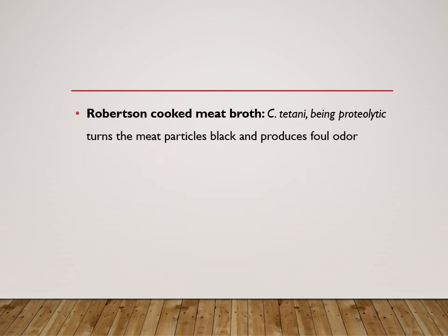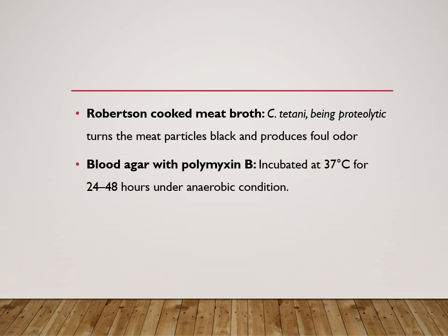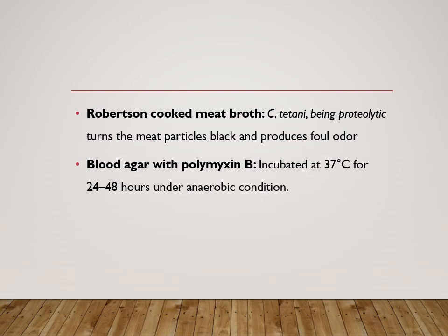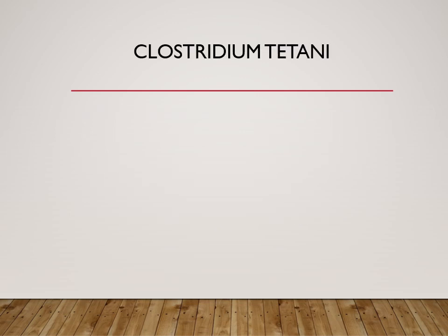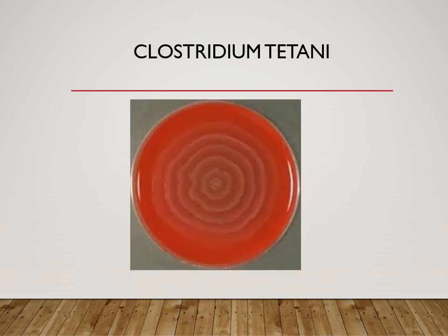The media you can use include Robertson's cooked meat broth — when you inoculate the sample, the meat particles will turn black and produce a foul odor. For plate culture, use blood agar with polymyxin B, inoculate the sample, and incubate at 37°C for 24 to 48 hours under anaerobic conditions. If the bacteria grow, they will produce swarming growth, similar to Proteus. This picture shows the swarming growth of Clostridium tetani.